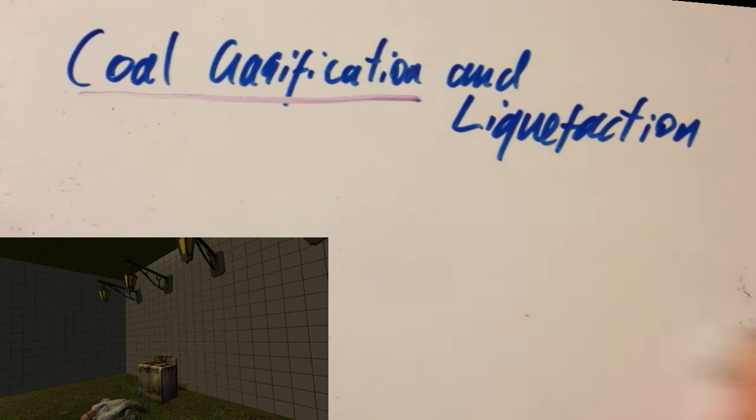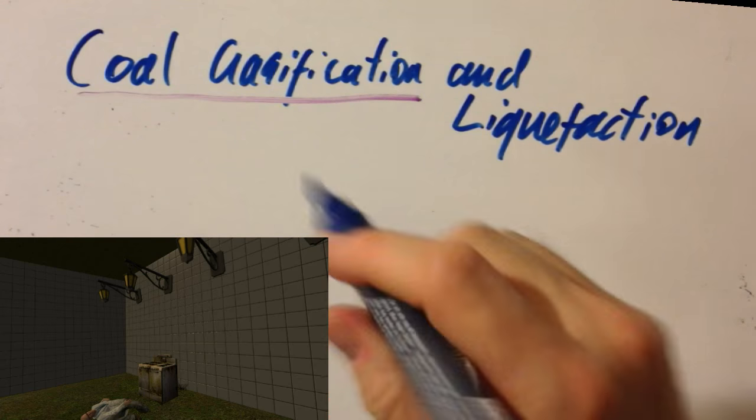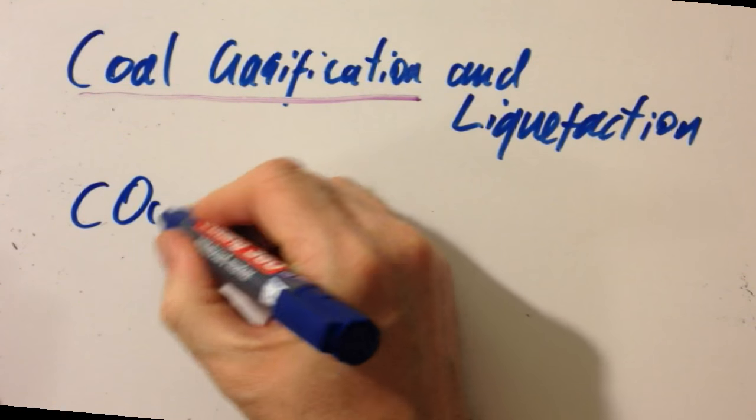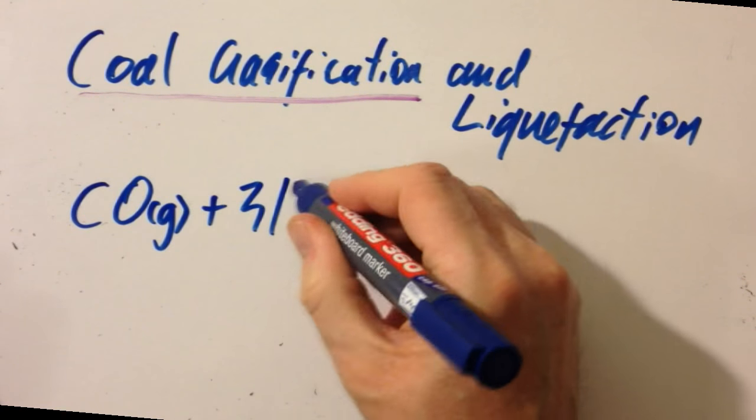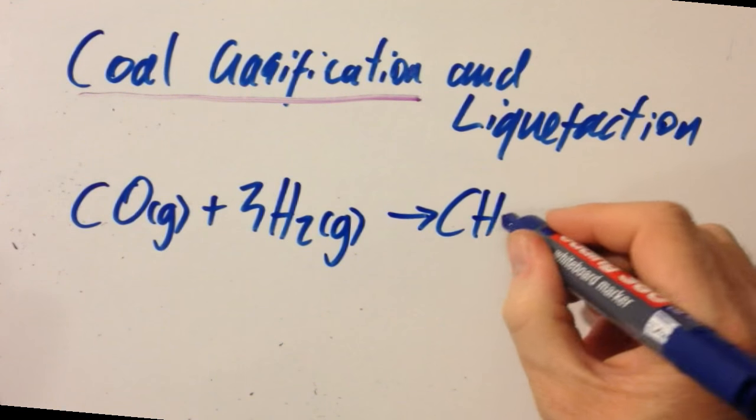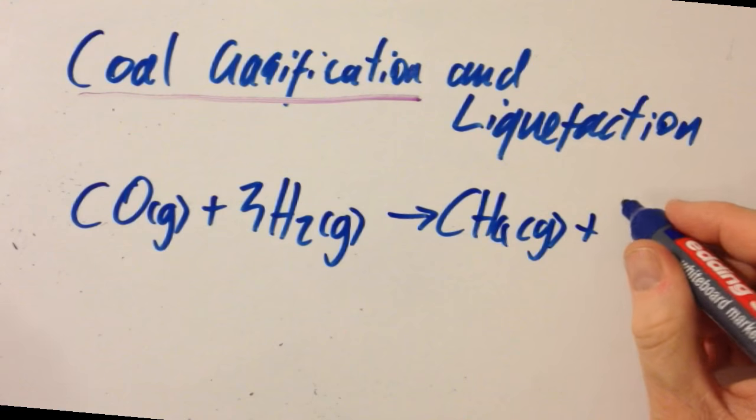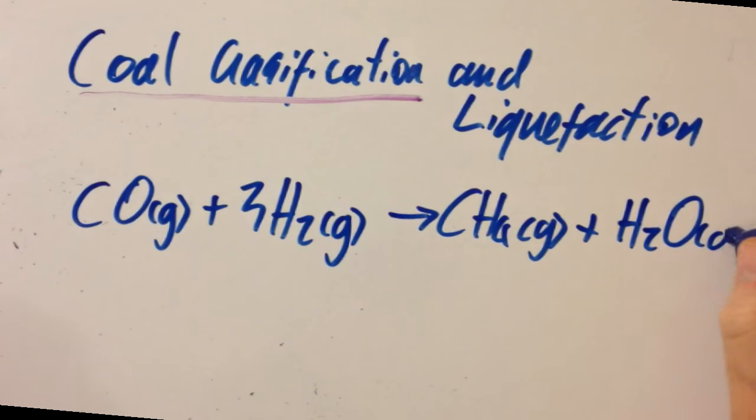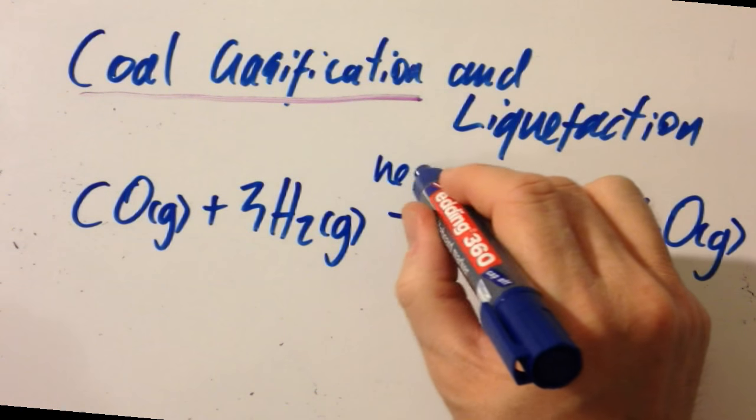So moving on to the second equation, we've got carbon monoxide and hydrogen. Oh, well, that was the products from the previous one. And that makes CH4 gas and H2O gas. Again, it has to be heated.